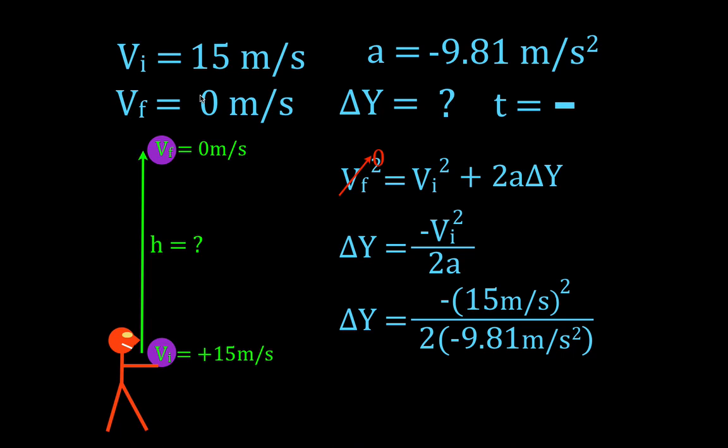Okay, so we're simply going to square 15. I think that's 225 divided by 2 times 9.81. And we get that the height that the ball reaches, or the height that any object would reach, when it's projected with the initial velocity of 15 meters per second, straight up under free fall conditions, the height that it will reach is 11.5 meters. So there you go. That's all there is to it.